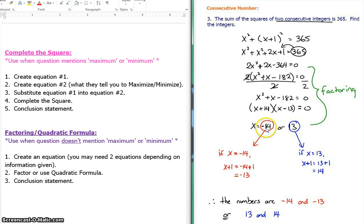So if x, your first number, is negative 14, your second number is going to be negative 14 plus 1, which is negative 13. Those are your two integers. Or, if your first number was 13, your second number must have been 13 plus 1, which is 14. So you can either have the red set of numbers or the blue set of numbers as your answers. You have to mention both sets. Okay, so then conclusion statement is right here.